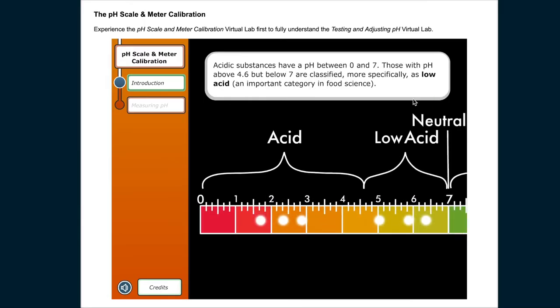Acidic substances have a pH between 0 and 7. Those with pH above 4.6 but below 7 are classified more specifically as low acid, an important category in food science.